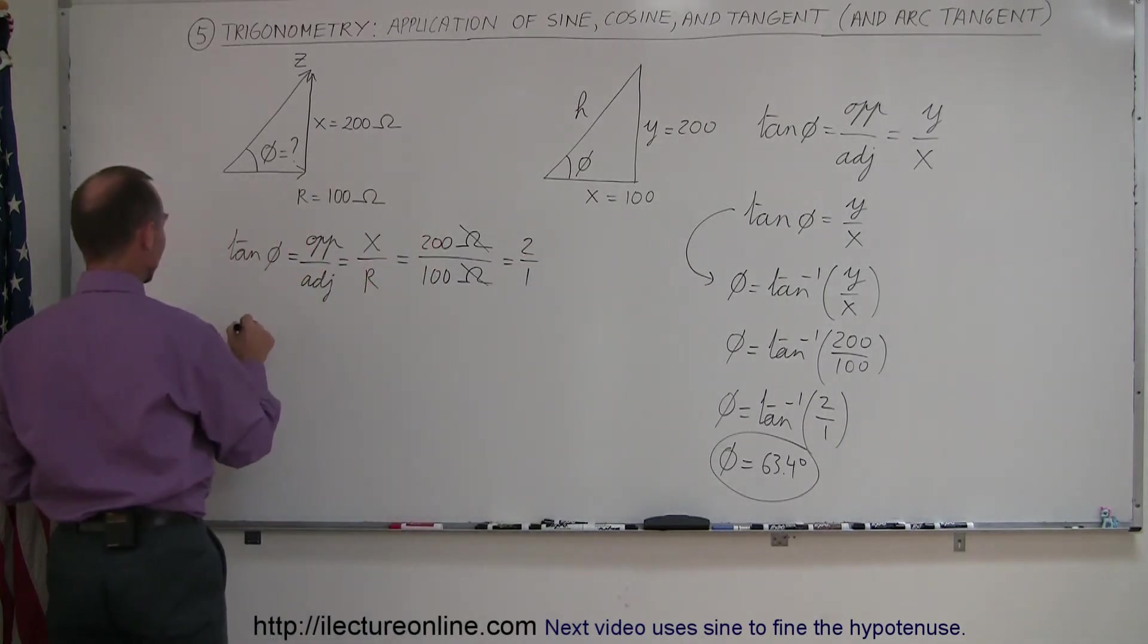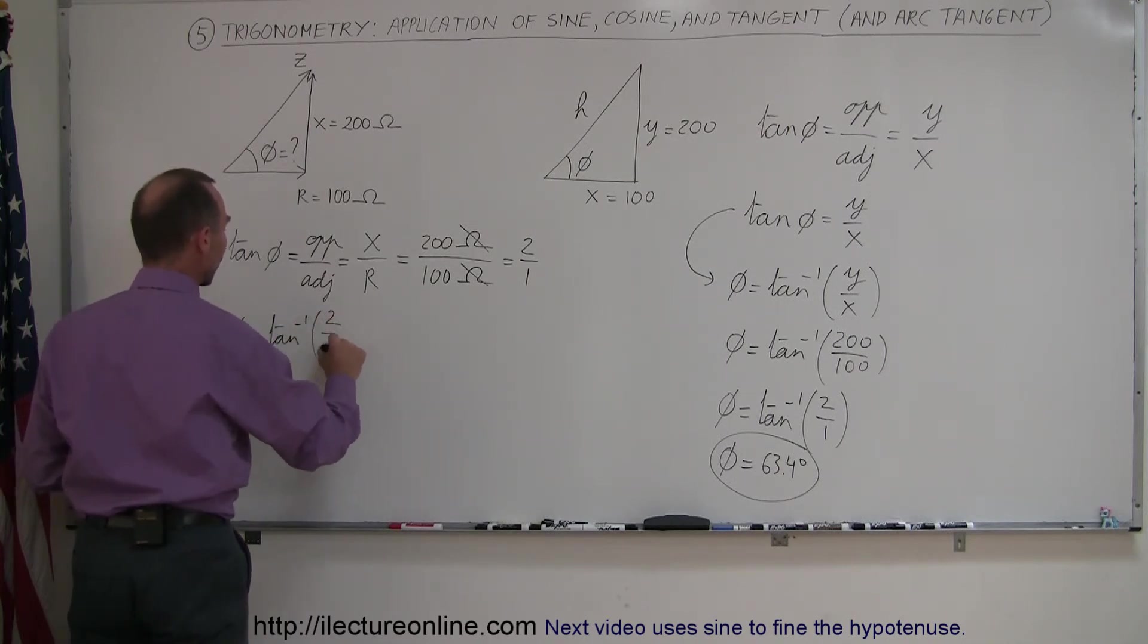And 200 divided by 100 is equal to 2 over 1, which is just what we had over there. So, therefore, now we can write that phi is equal to the arctangent, inverse tangent, of 2 over 1.